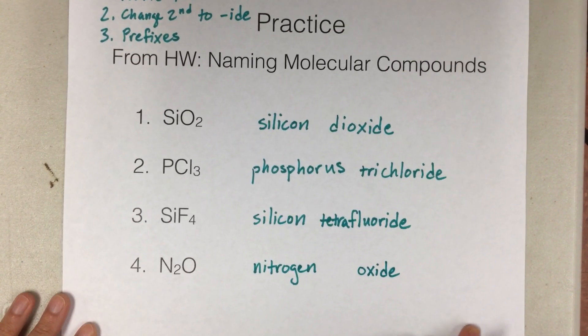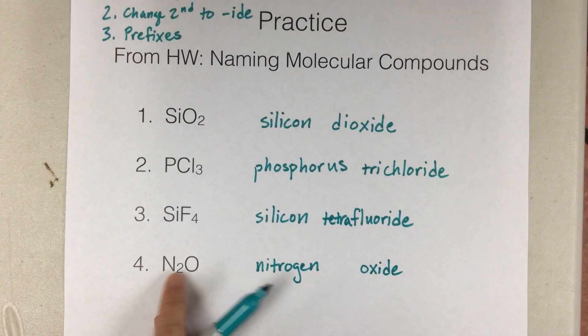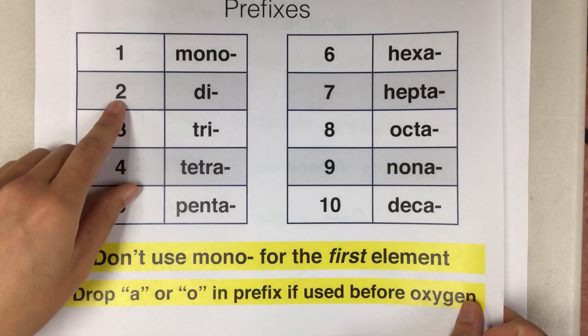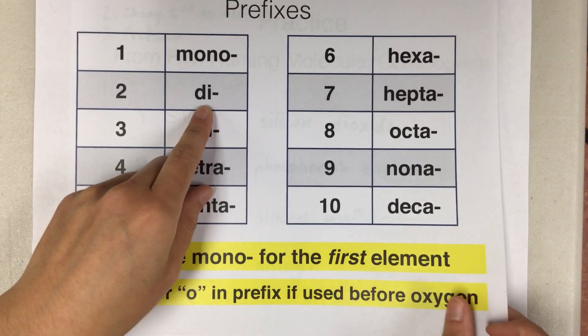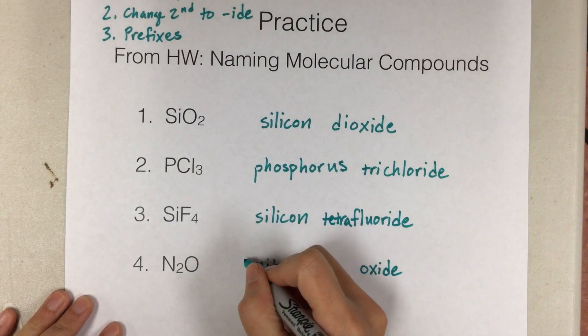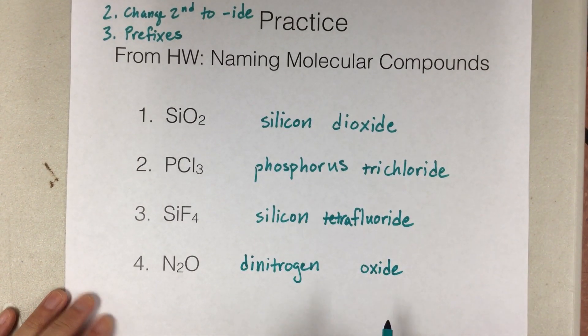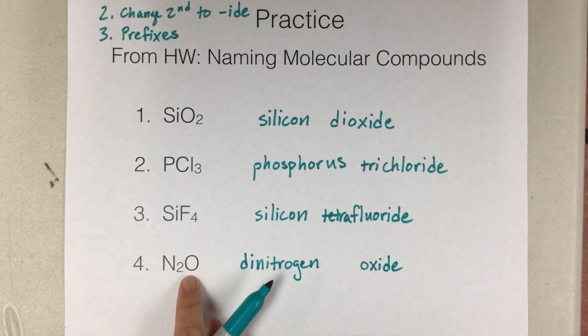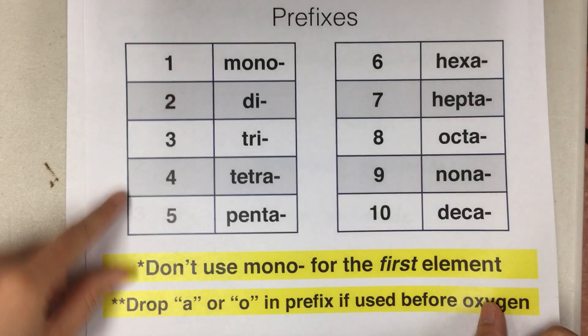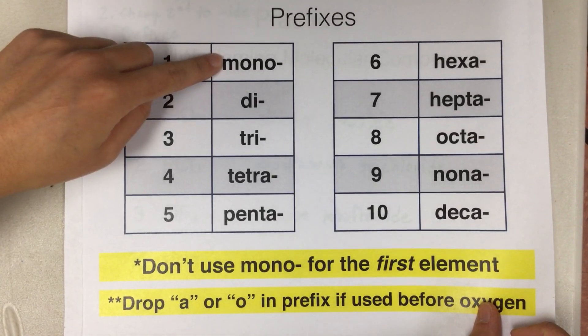All right, and now we add prefixes. So nitrogen, we have two. Two is di. So we need di here. Di-nitrogen. And then the second element, we have just one. So if it's one, we use mono.